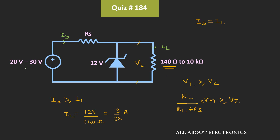Similarly, for the input voltage, we also consider the minimum value. For a fixed value of Rs, the series current Is will be less for 20V and more for 30V, because Is equals (Vin minus Vz) divided by Rs. As Vin increases, Is also increases. So if Is can supply the load current at the minimum voltage, it will definitely work for 30V. Therefore, we calculate the value of Rs for Vin equals 20V.